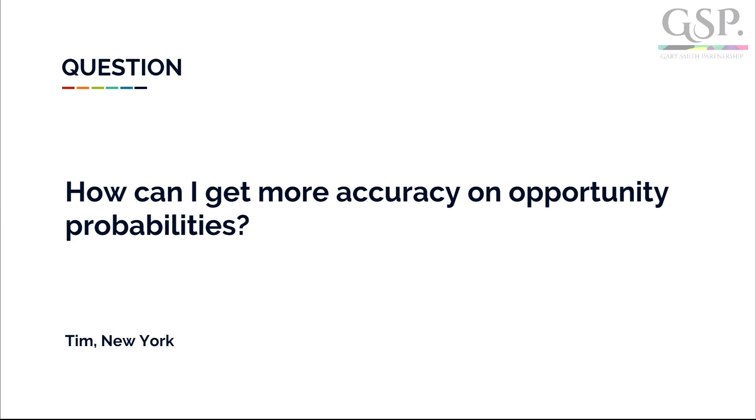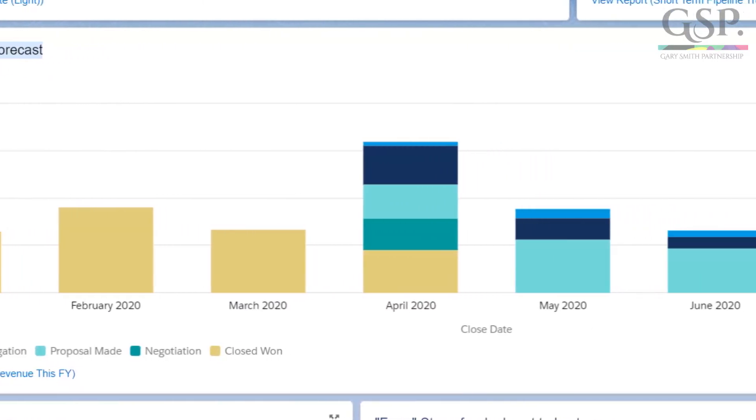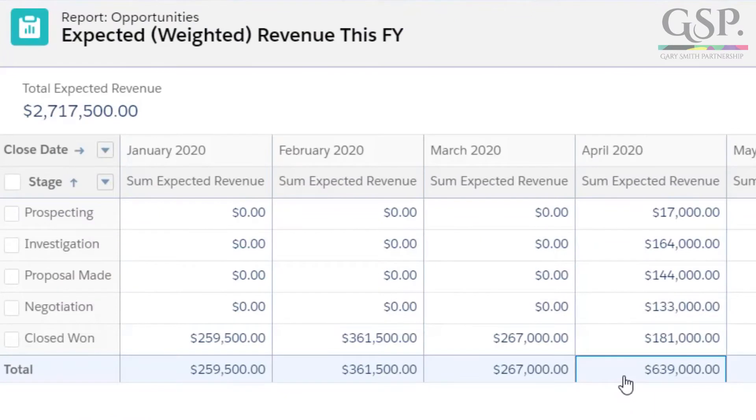Today's question comes from New York, from Tim. How can I get more accuracy on opportunity probabilities? Tim is asking this question because he's using the expected revenue report to create his sales forecast, and he wants that forecast to be more accurate, especially given the circumstances that we're all currently in. The expected revenue report is an excellent way to create a robust sales forecast that will stand up to scrutiny.